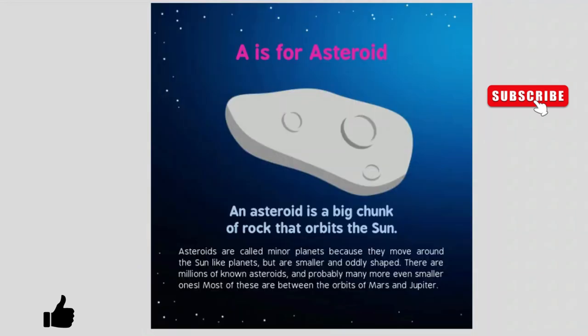A is for asteroid. An asteroid is a big chunk of rock that orbits the Sun. Asteroids are called minor planets because they move around the Sun like planets, but are smaller and oddly shaped. There are millions of known asteroids and probably many more even smaller ones. Most of these are between the orbits of Mars and Jupiter.